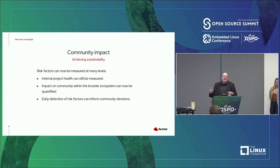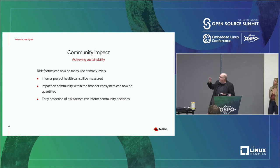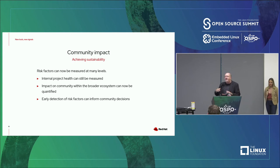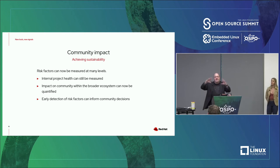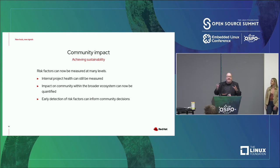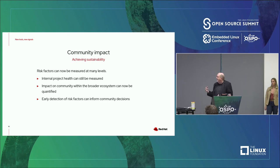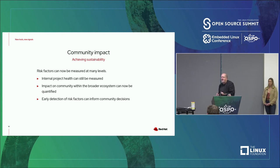Community impact was probably the first thing we've always wanted to do. Now we're going to measure risk factors on different levels. We're still looking at internal project health, but now with tools like Augur and others we're starting to build and integrate, we're going to look at broader ecosystem trends. So we can figure out what's going on in the general landscape — like Kubernetes, which is a big ecosystem. It would be nice to see not just individual projects but the general trend for health in that entire ecosystem.